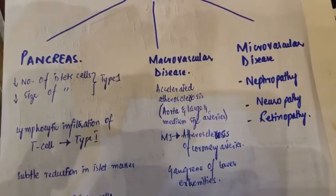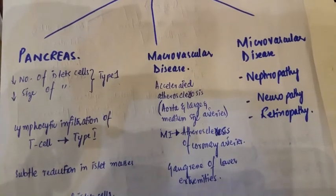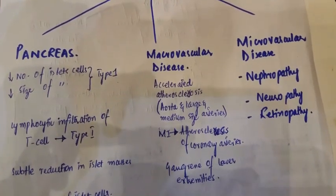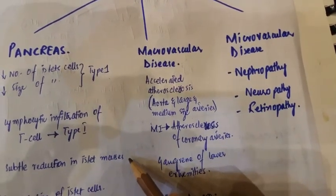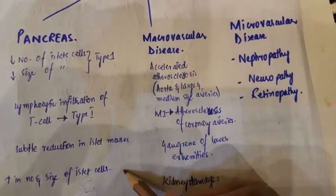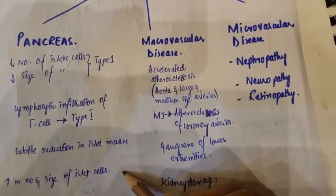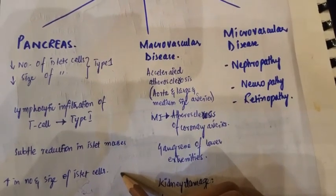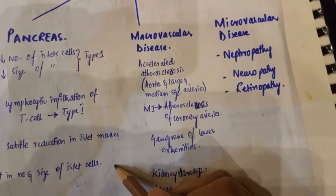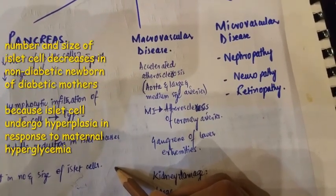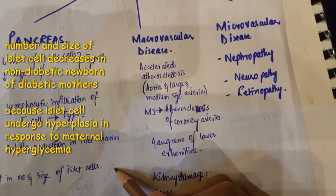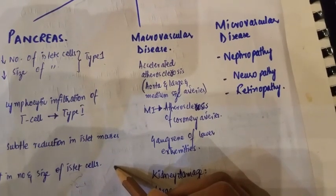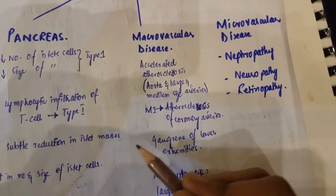There is lymphocytic infiltration of T cells, as happens in type 1 diabetes. There is also a subtle reduction in islet cell mass because of the destruction of beta cells. The number and size of islet cells increases in non-diabetic newborns of diabetic mothers, in which the fetal islet cells undergo hyperplasia in response to maternal hyperglycemia.